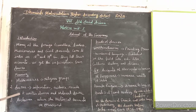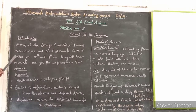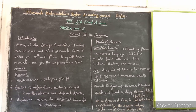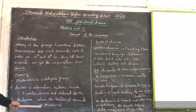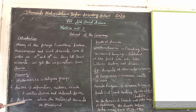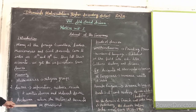We have two types of sources for information about the arrival of the Europeans. One is written sources and another one is material sources. We also get information from the archives. Archives are places where historical documents are reserved. They give information about the social, economic, political, and administrative life of the people.